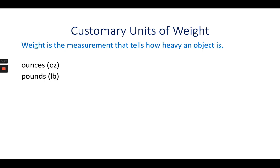For the last thing that we're going to focus on in this video is weight. Weight measures how heavy an object is. The two units that we're going to talk about today are ounces and pounds. The abbreviation for ounces is OZ, and the abbreviation for pounds would be LB.